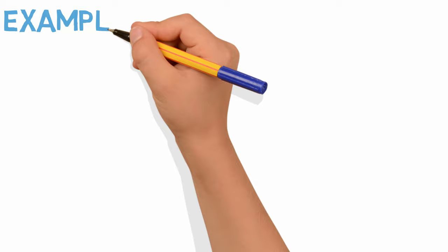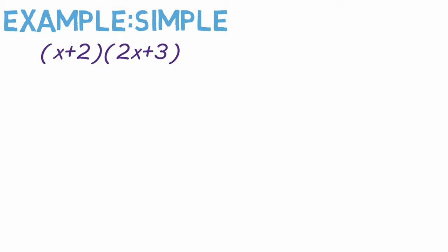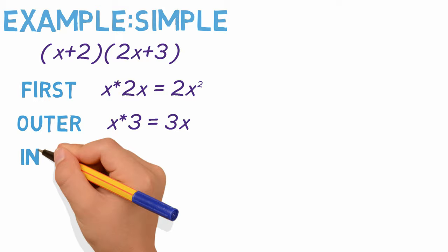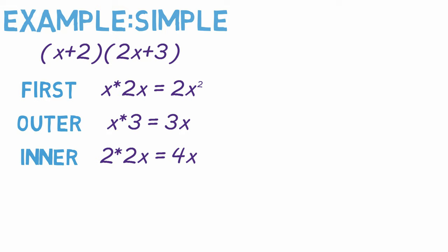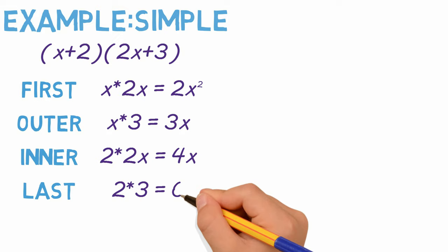We'll start simple. Multiply x plus 2 by 2x plus 3. We start by multiplying the first two terms together. So x times 2x equals 2x squared. Next we multiply the outer terms. x times 3 equals 3x. Then we multiply the inner terms together. 2 times 2x gives us 4x. And finally we multiply the last two terms together. 2 times 3 gives us 6.